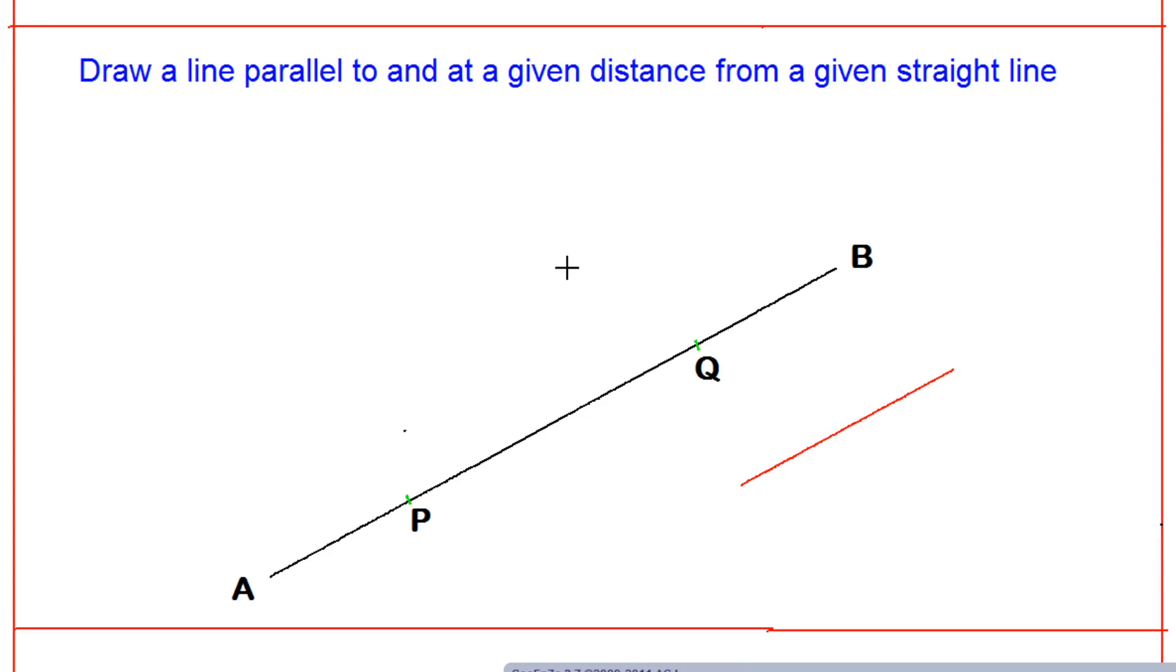In this lecture, we want to draw a line parallel to and at a given distance from a given straight line. Suppose you have a given straight line AB and a given distance. This red line we can give a name, say XY.